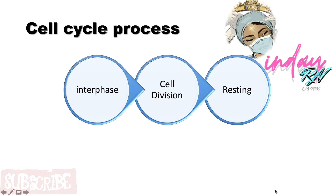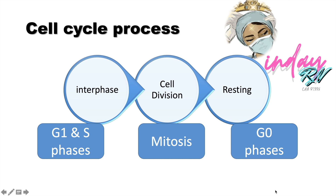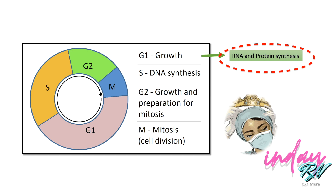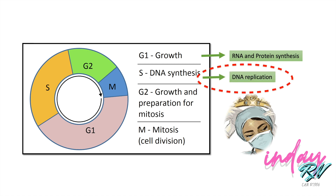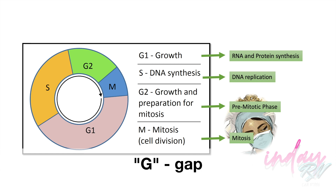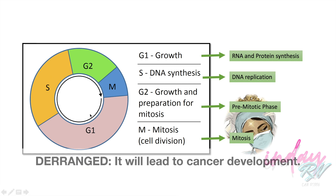There are three processes in the cell cycle: interphase, cell division, and resting. In interphase, the G1 and S phases occur. In cell division, mitosis of the cell is performed, and the resting phase is the G0 phase. G1 stands for RNA and protein synthesis — that is already the growth phase. S means DNA synthesis or DNA replication. G2 is growth and preparation for mitosis, called the pre-mitotic phase. M — mitosis — is the actual cell division. The G stands for gap. The two most important phases are S (synthesis) and M (mitosis). Once there is loss of control in this cell cycle, it leads to cancer development.